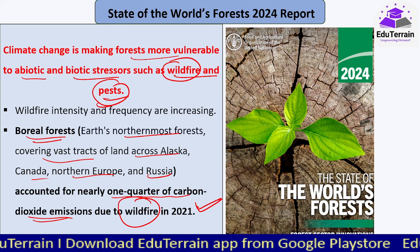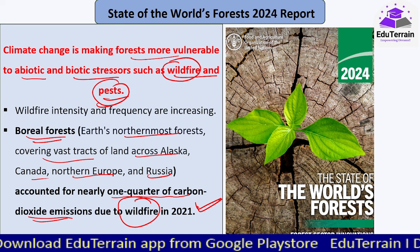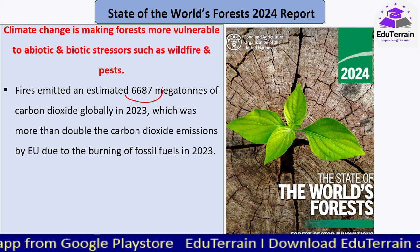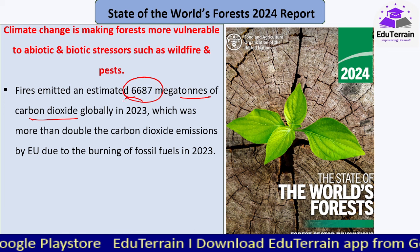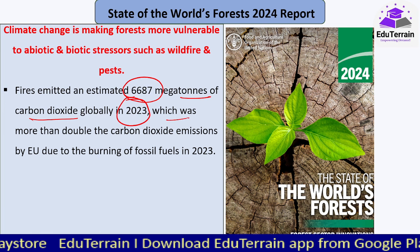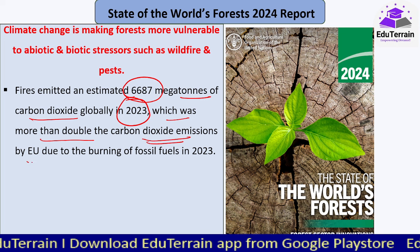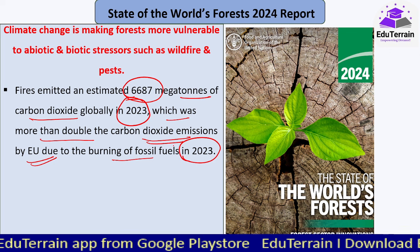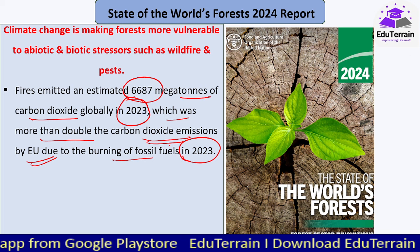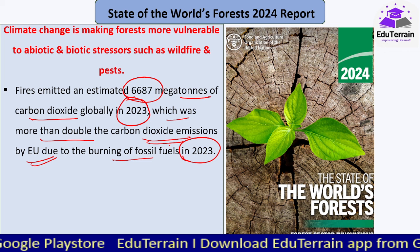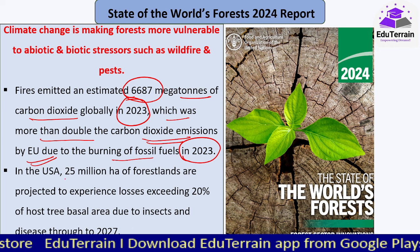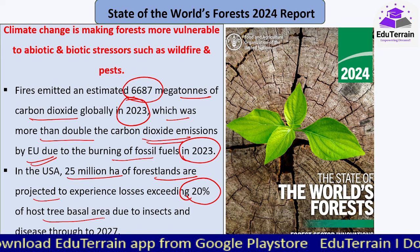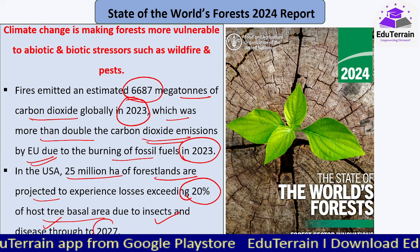Wildfires not only impact vegetation but also release enormous amounts of carbon dioxide into the atmosphere. Fires emitted an estimated 6,687 megatons of CO₂ globally in 2023, which was more than double the CO₂ emissions by the European Union due to the burning of fossil fuels in the same year. In the USA, 25 million hectares of forest lands are projected to experience losses exceeding 20% of the host tree basal area due to insects and diseases through to 2027.